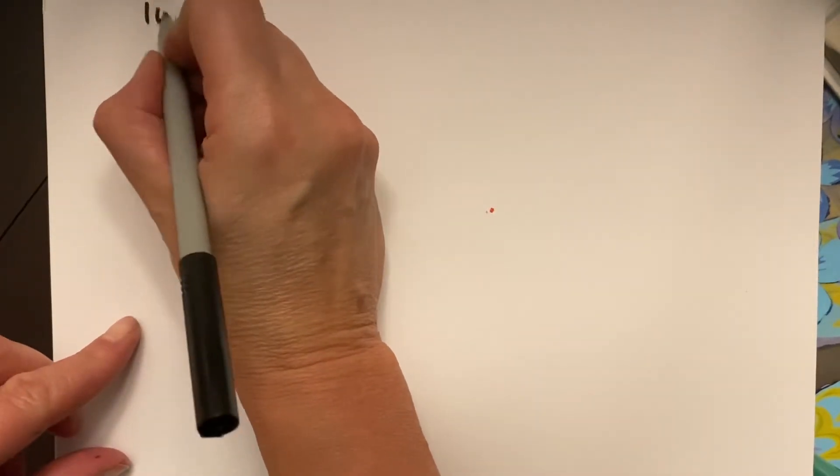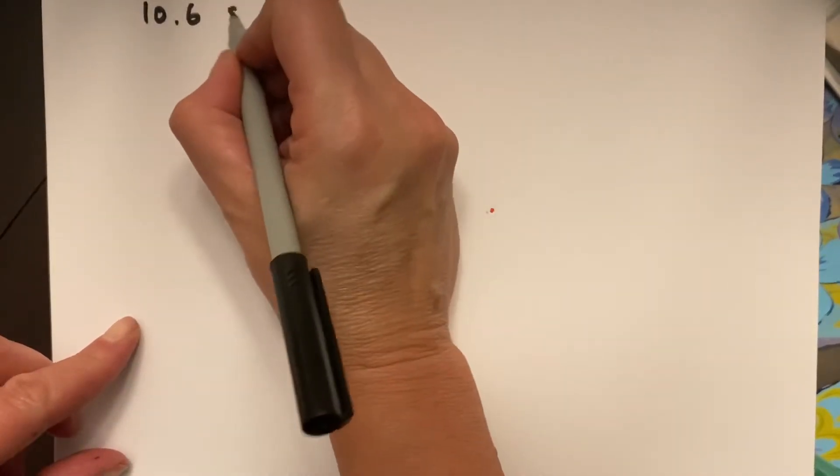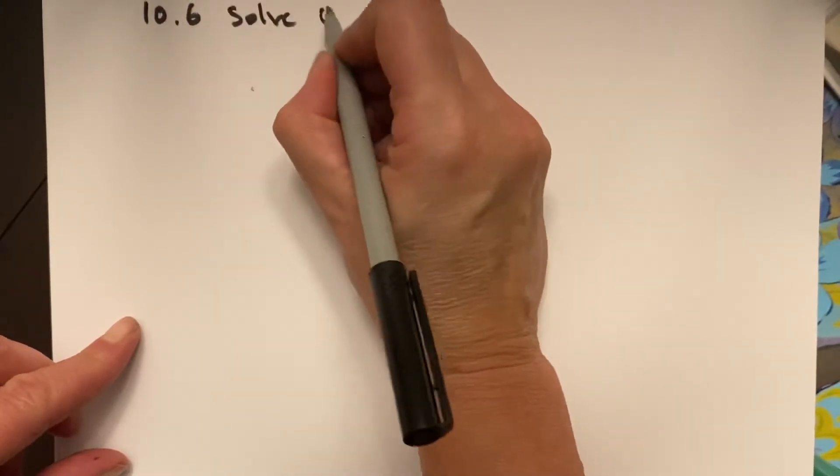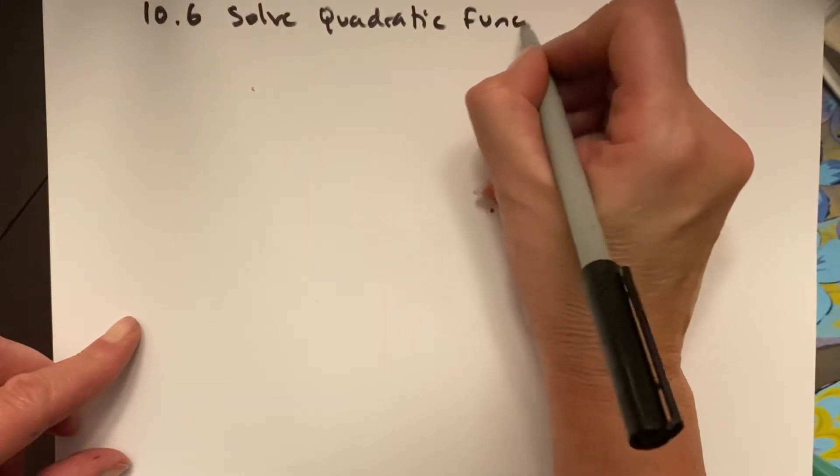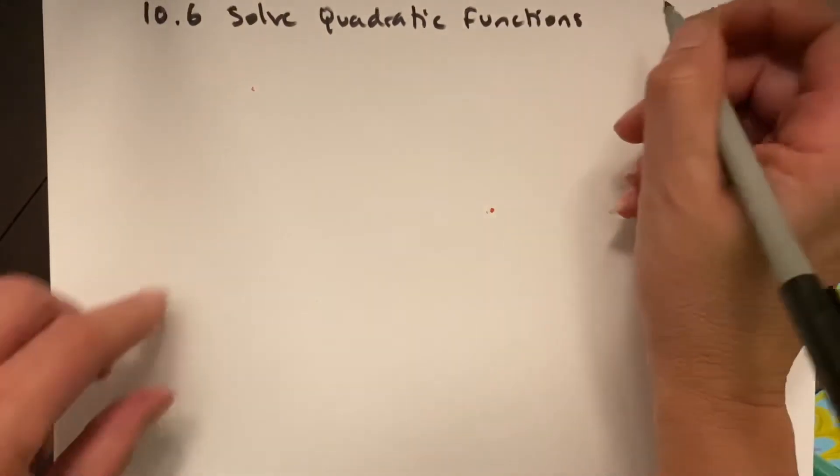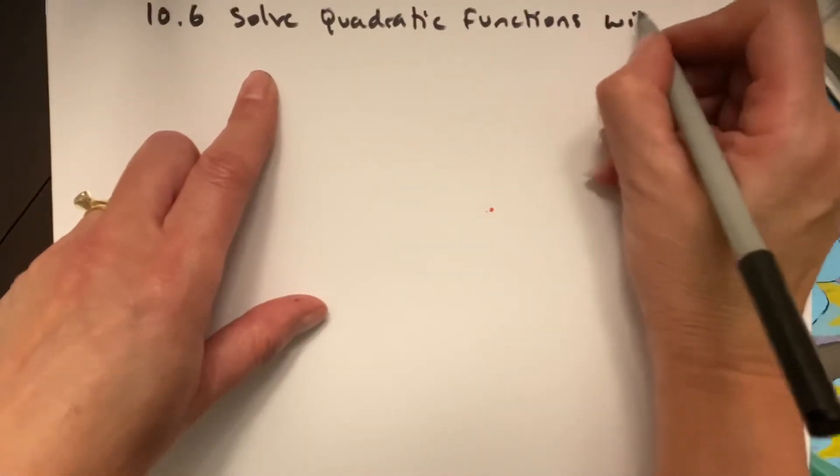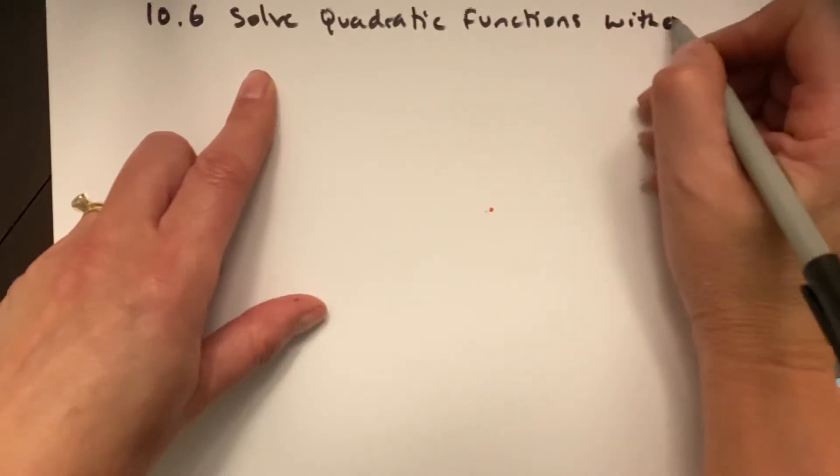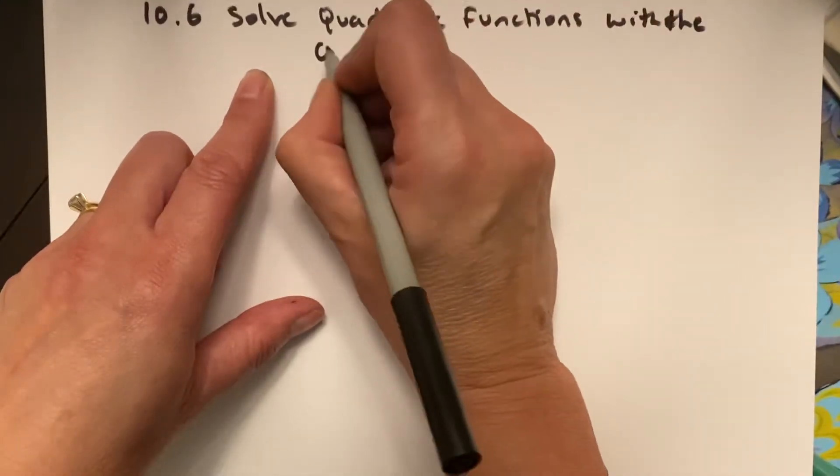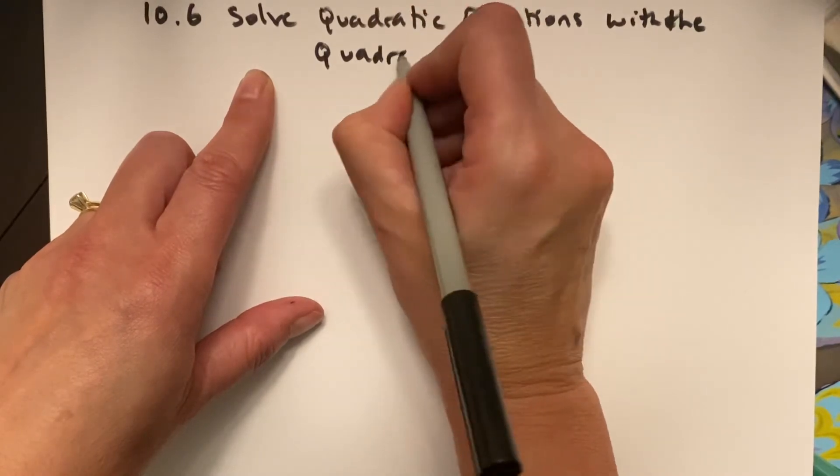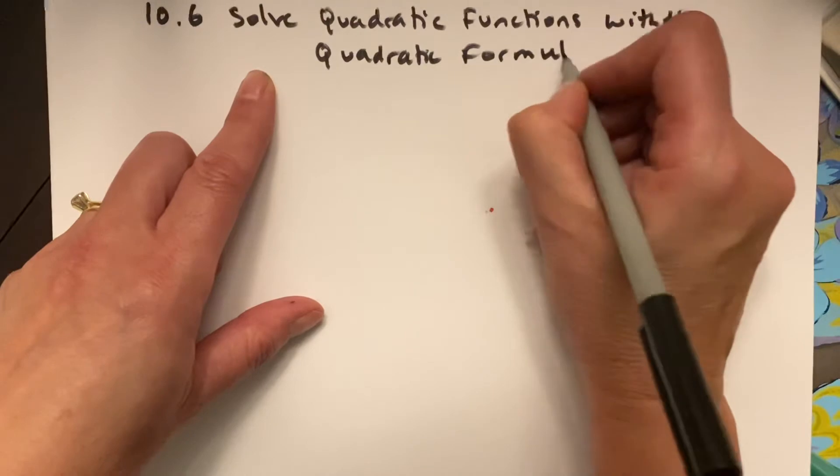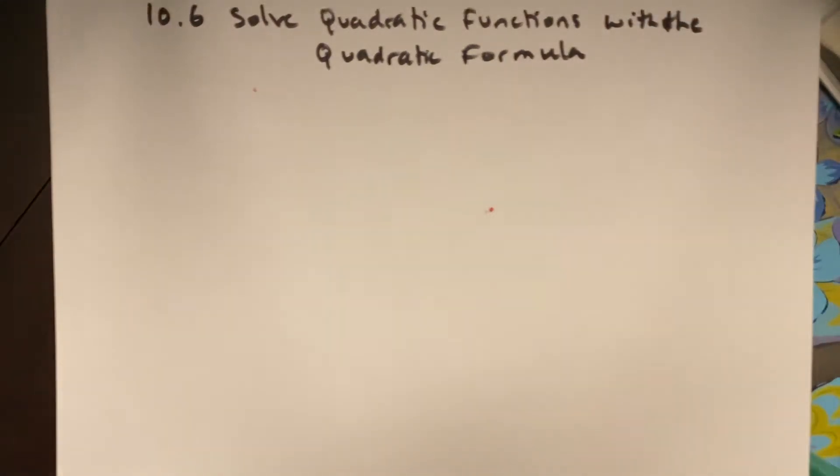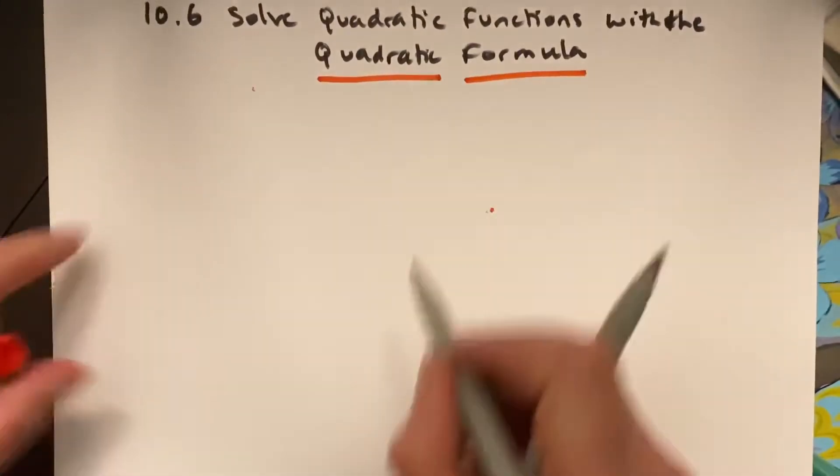The quadratic equation, as I mentioned, is a favorite method because it can be used in any situations. But you have to remember it accurately, and you have to apply it very carefully. So the quadratic formula is really important, and you have to memorize it.